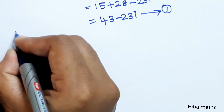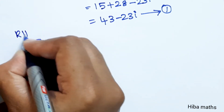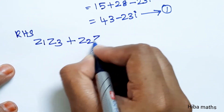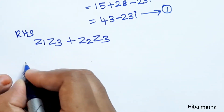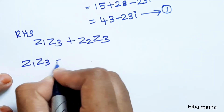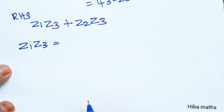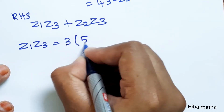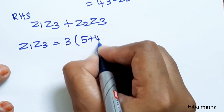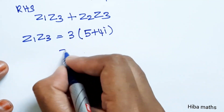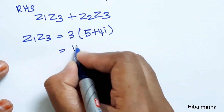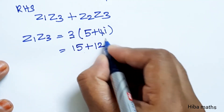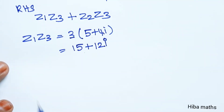RHS: z1 into z3 plus z2 into z3. First, z1 into z3 — z1 value is 3, z3 value is 5 plus 4i. Multiplying: 3 times 5 is 15, plus 3 times 4i is 12i. So z1 into z3 equals 15 plus 12i.